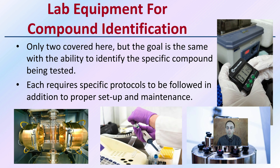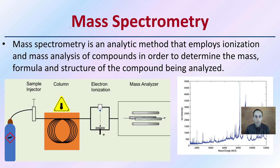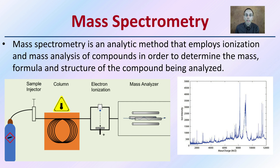The lab equipment used for compound identification includes two methods covered here. Mass spectrometry is an analytical method that employs ionization and mass analysis of compounds in order to determine the mass formula and structure of the compound being analyzed. This is another highly specific process that allows compounds to be more precisely identified than can be done in the field.